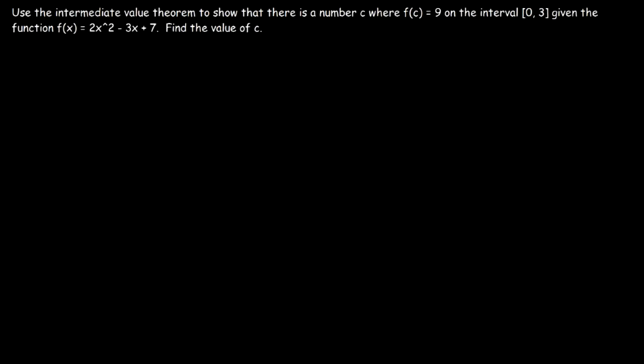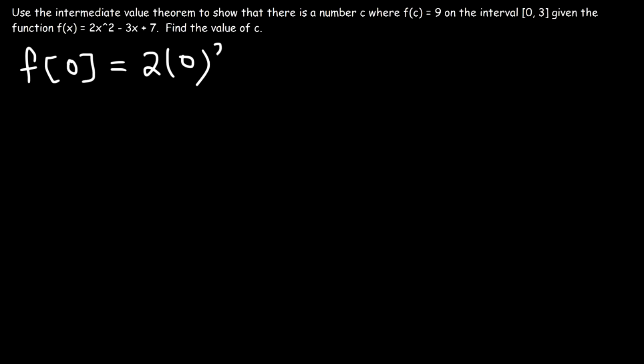Here's a problem you can work on. Use the Intermediate Value Theorem to show that there is a number c where f of c is equal to nine on the interval zero to three, given the function f of x is equal to two x squared minus three x plus seven. In addition, find the value of c. So first, let's evaluate the function at a and b — let's find the function value when x is zero by plugging it into that equation.